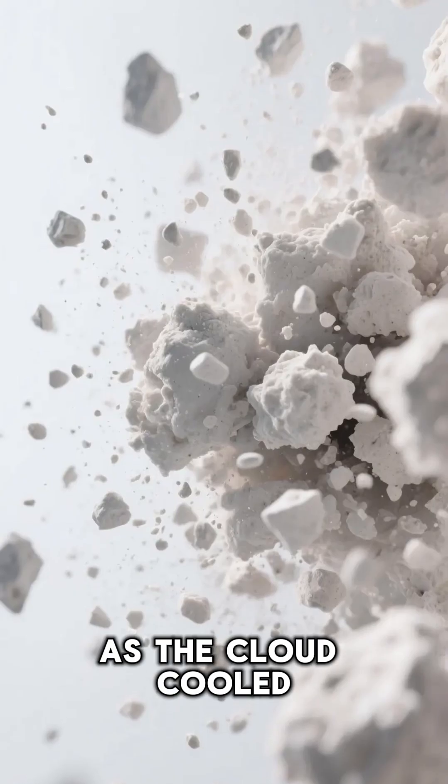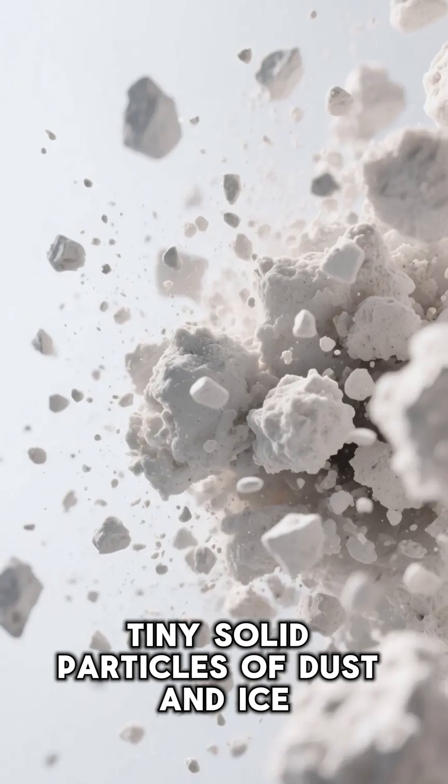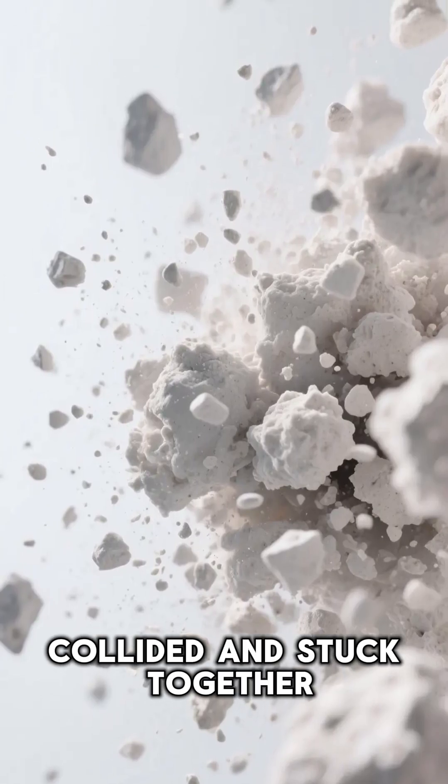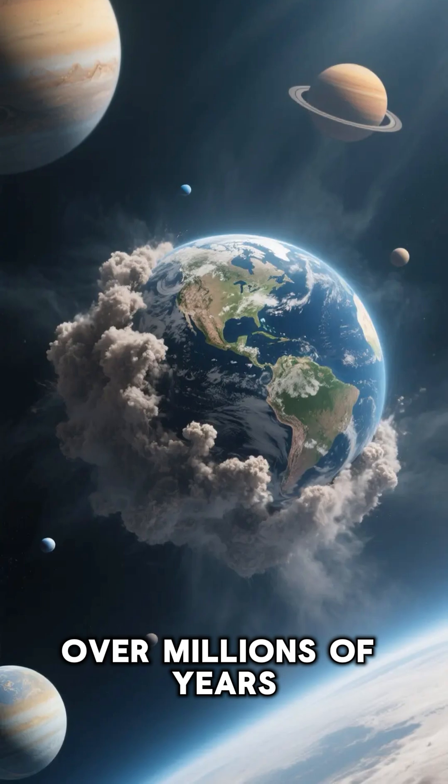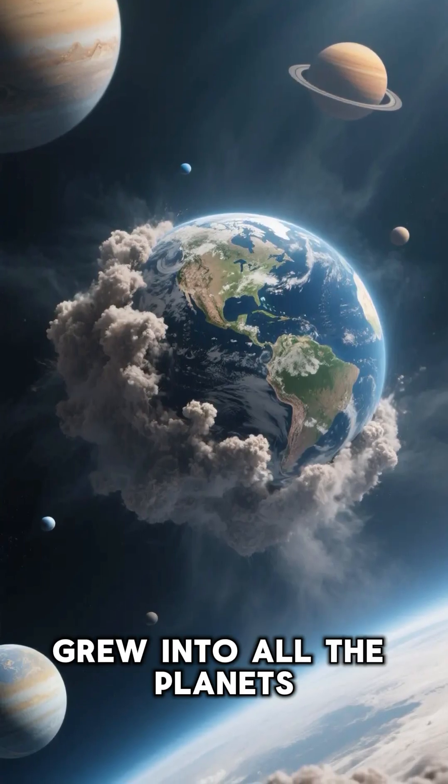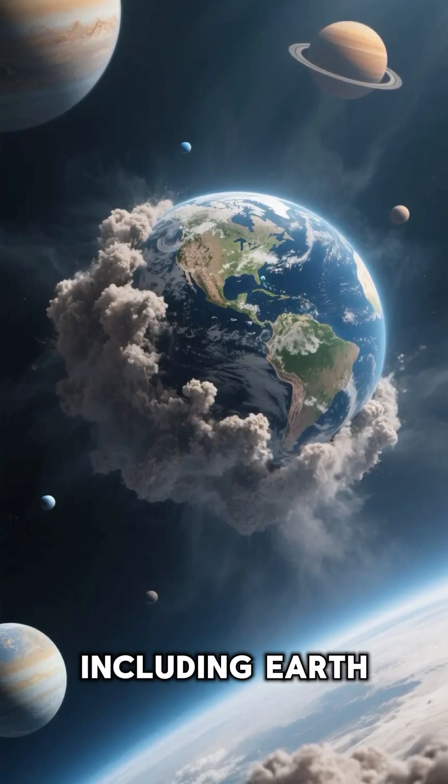As the cloud cooled, tiny solid particles of dust and ice collided and stuck together, forming clumps. Over millions of years, these clumps grew into all the planets, including Earth.